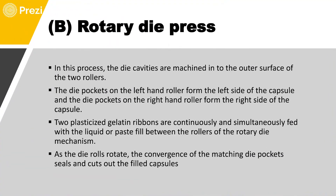Next we discuss the rotary die process. It is one of the best methods used for commercial production for filling up liquids and suspensions, since the aquagel process is specifically used for filling dry powders. The die cavities are machined out in the outer surface of two rollers — the die pockets on the left-hand roller form the left side of the capsules and the die pockets on the right-hand roller form the right side.